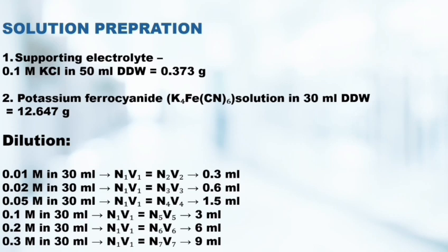The dilutions are 0.01 molar, 0.02 molar, 0.05 molar, 0.1 molar, 0.2 molar, and 0.3 molar. All of these we have to make in 30 ml double distilled water.